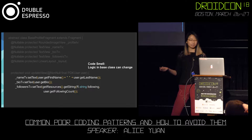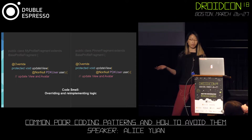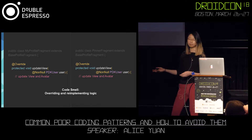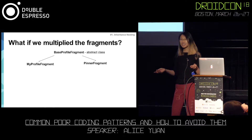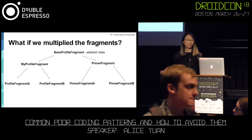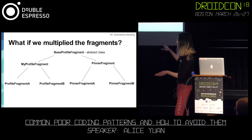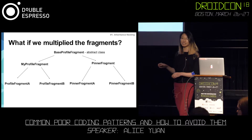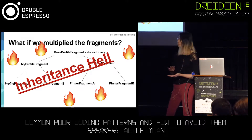In this case we only have two fragments inheriting the base fragment. We also have the code smell of re-implementing and overwriting the logic every single time. But what if we multiply the fragments? It's unlikely that you only have two screens in your app. So let's do some A/B tests — let's add a profile fragment with two versions, and a pinner fragment with two versions as well. That means we have six variations of the base fragment. This is what we call inheritance hell, and we should really avoid this.